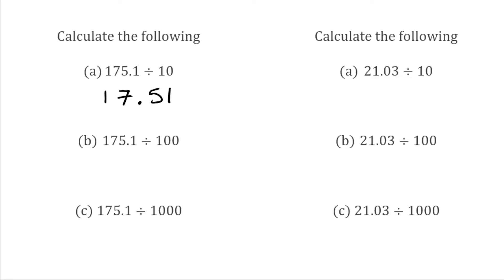For the next part, we've got 175.1 divided by 100. There are two zeros in 100, so we move the digits two places to the right. The 5 and the 7 both make it over to the right-hand side of the decimal. We still have a 1 on the left, then 751, so our answer is 1.751.